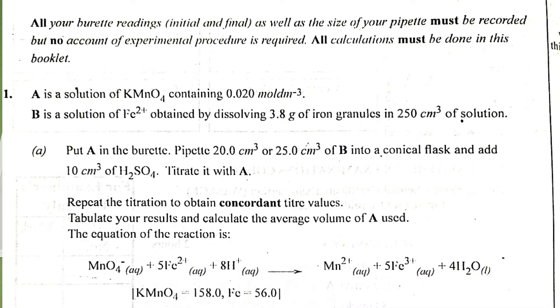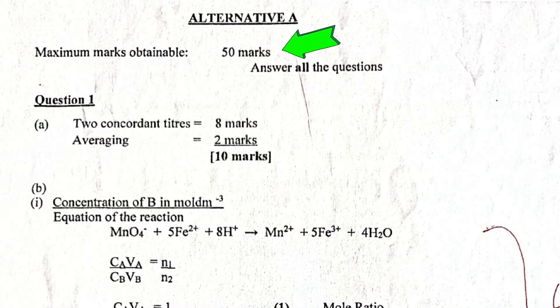So, we are to calculate. What are we expected from the marking there? What is expected of us? Let's check it please. The maximum marks obtainable for the alternative A total is 50 marks. So, we are to answer all the questions. Question number one. How are you expected to answer it?